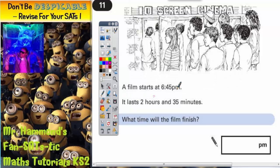Question 11: A film starts at 6:45pm and it lasts 2 hours and 35 minutes. What time will the film finish?